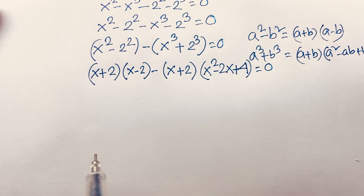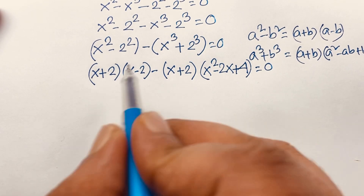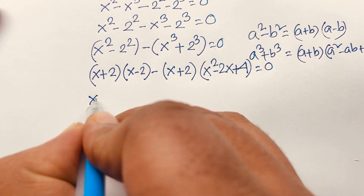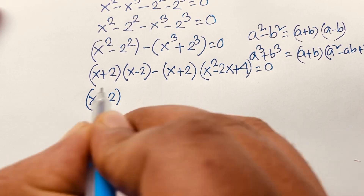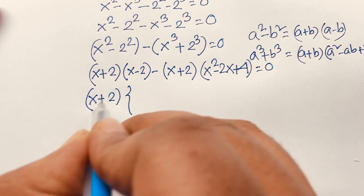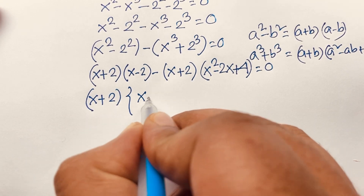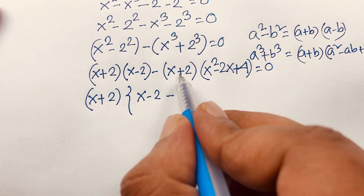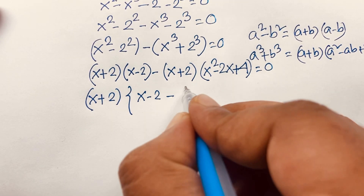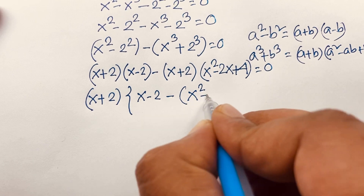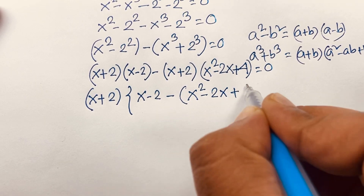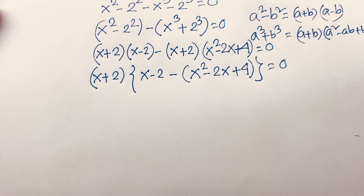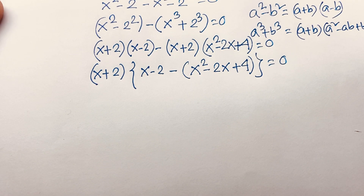I can see that (x + 2) is common in both terms. Factoring out (x + 2), we get (x + 2) times the bracket: (x − 2) minus (x squared minus 2x + 4), equals 0.